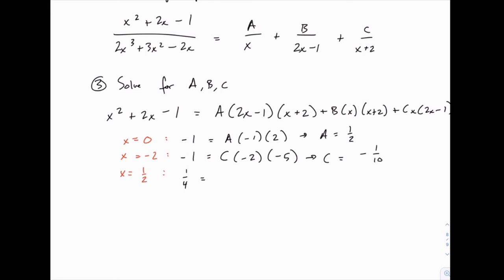And then on the right side, anything that has 2x - 1 in it will disappear, which just leaves the middle term B times 1/2 times 5/2. So we have B times 5/4 equals 1/4. And you can solve by multiplying both sides by 4/5 to get B equals 1/5.